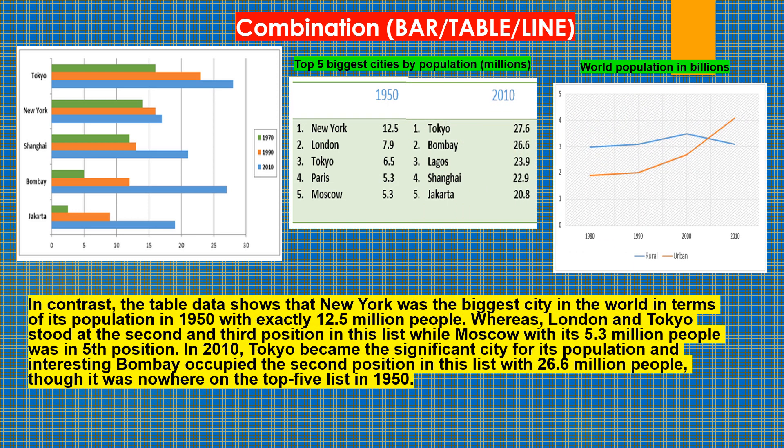In contrast, the table data shows that New York was the biggest city in the world in terms of population in 1950 with exactly 12.5 million people, whereas London and Tokyo stood at the second and third positions, while Moscow, with its 5.3 million people, was in the fifth position. In 2010, Tokyo became the most significant city for its population, and interestingly, Bombay occupied the second position with 26.6 million people, though it was nowhere on the top 5 list in 1950.